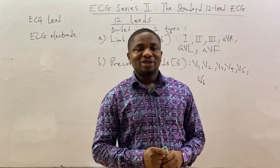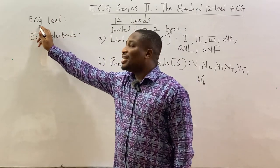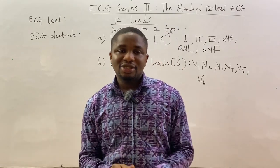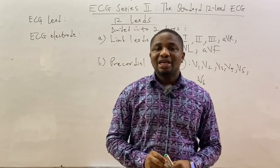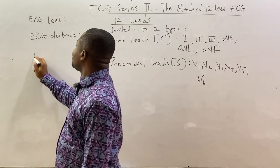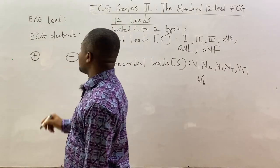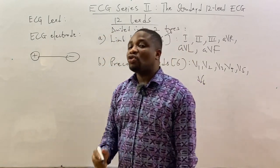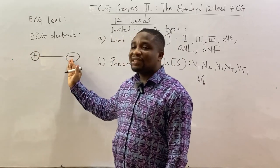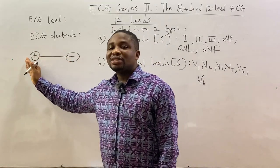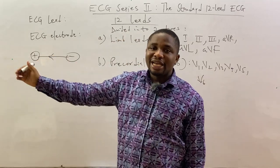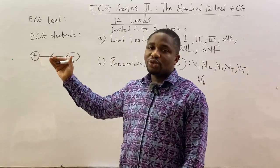The first thing we want to talk about is what an ECG lead is. An ECG lead can be described as an imaginary line drawn between two electrodes — a negative electrode and a positive electrode.